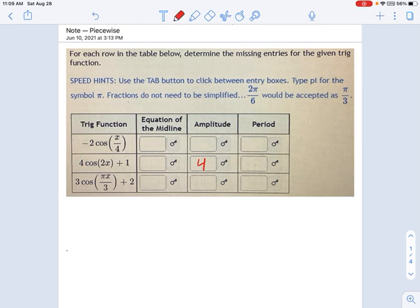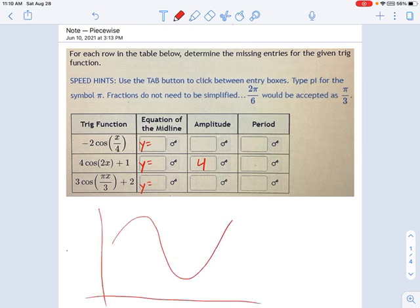First of all, every equation of the midline is going to be y equals something, because this is a vertical shift. Let's say we have a sine curve like this, and your x-axis is way down here. What is this line? That's the midline. So that's going to be y equals some number. That's what I'm talking about with the equation of the midline.